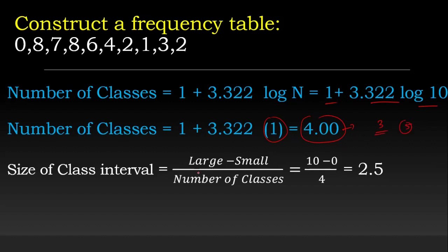The size of the class interval is calculated as the larger number minus the smaller number, divided by the number of classes. Here, 8 minus 0 divided by 4 gives 2. So the class size is 2. Starting from 0, the classes are: 0 to 2, 2 to 4, 4 to 6, and 6 to 8.